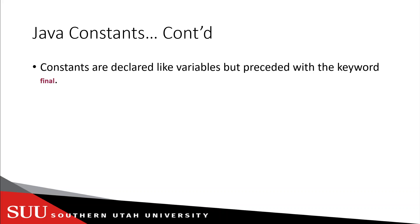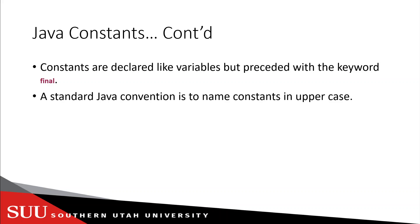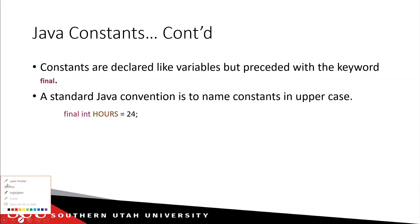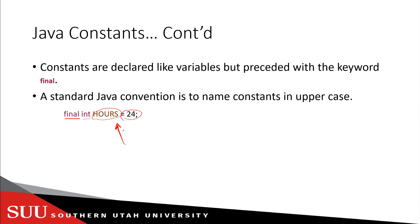How to declare a constant — it's going to be the exact same way in which we declare a variable, but we will use a new keyword called `final`. A standard Java convention is to name constants in uppercase letters so you don't mix them up with variables. It's just a convention, like the convention of starting a class name with an uppercase letter. For example, if I'm defining a constant for the number of hours, I make sure it's `final` to signal that it's a constant.